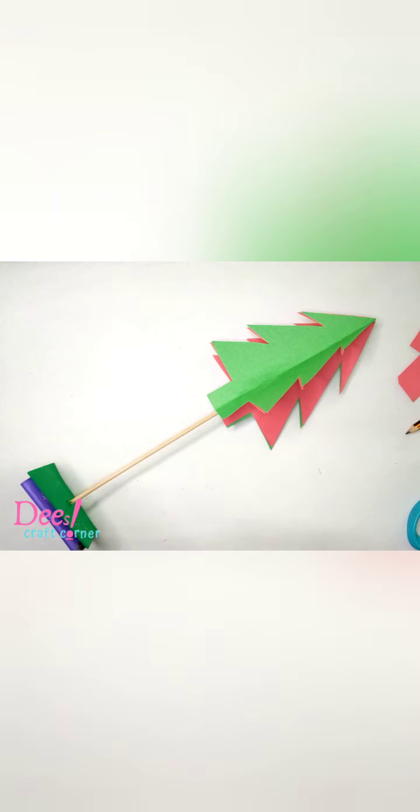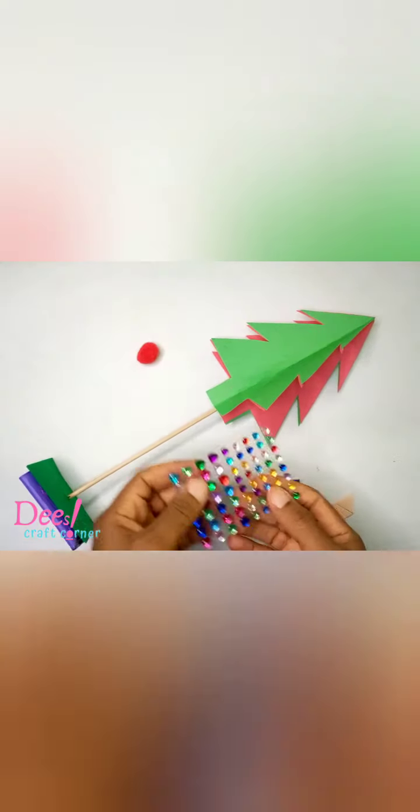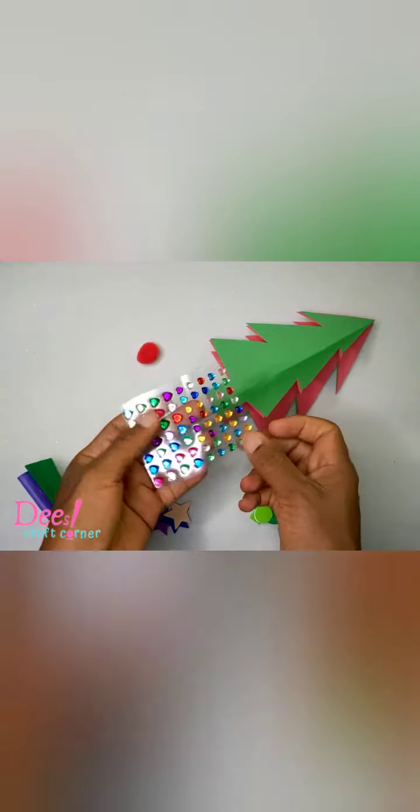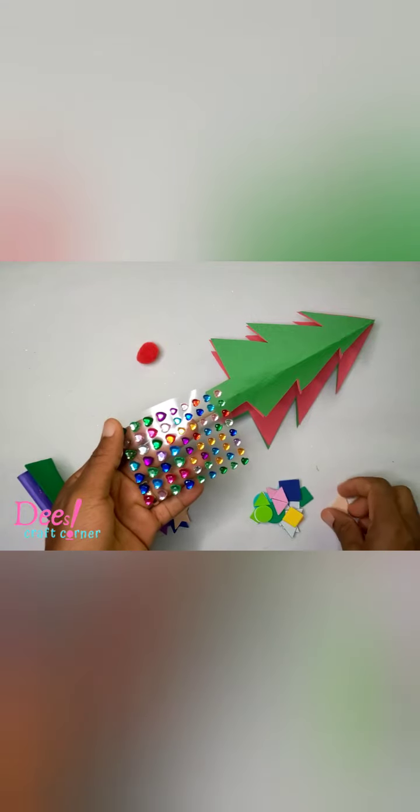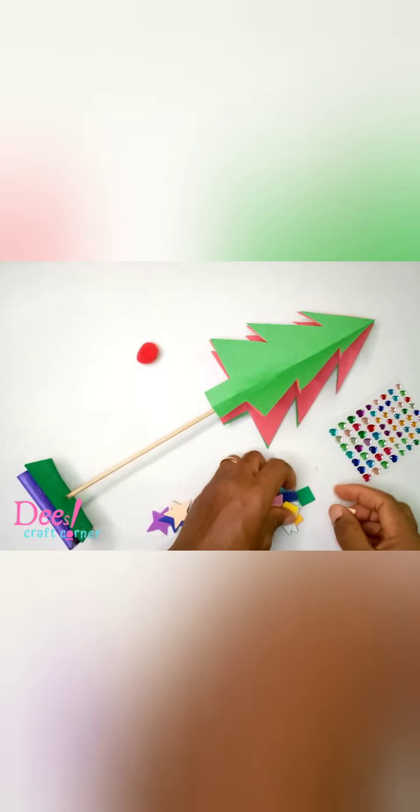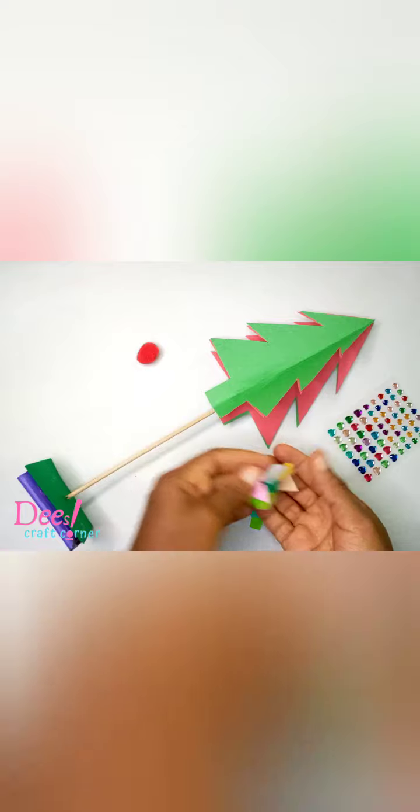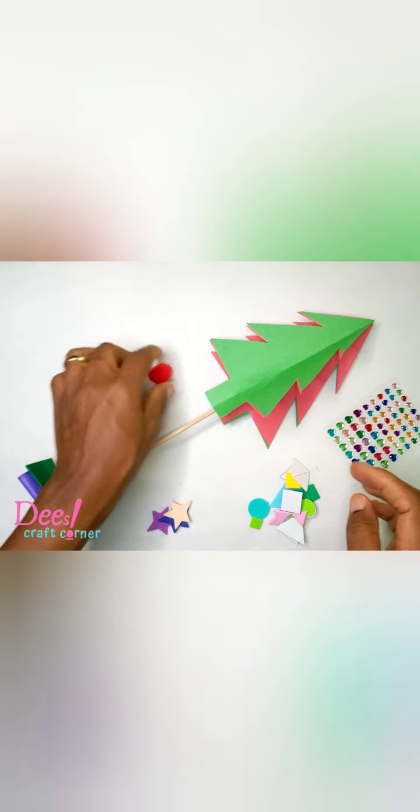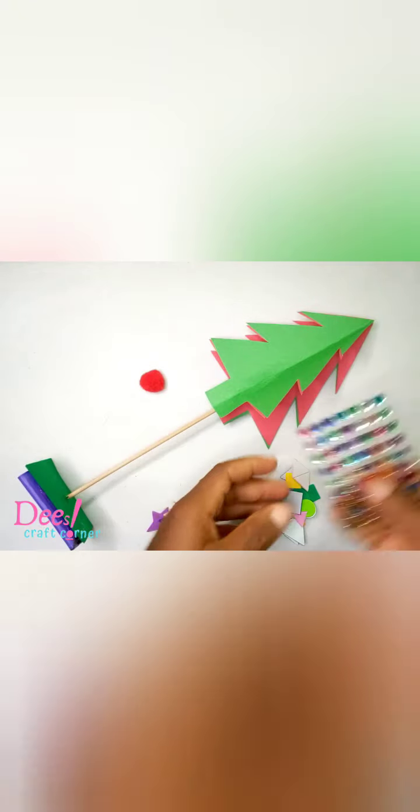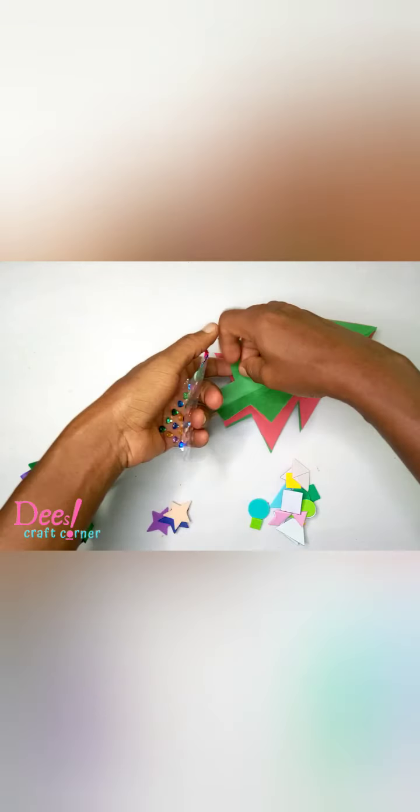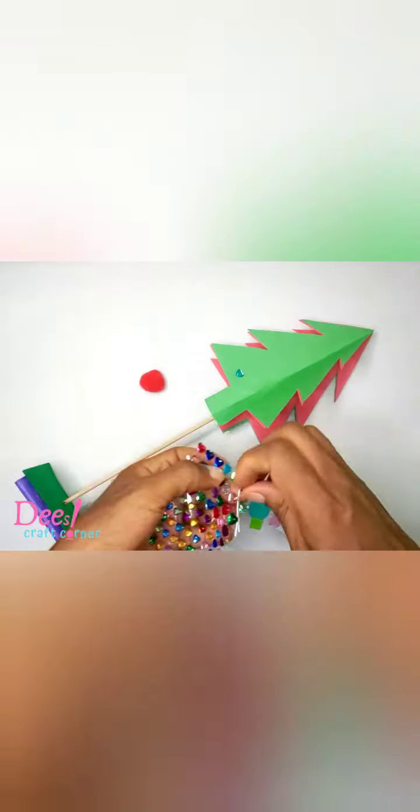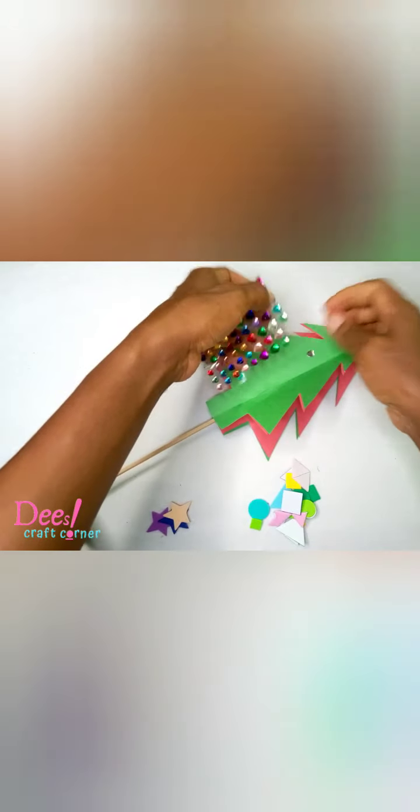Now you can decorate as you wish. These are lovely rhinestones that also come in the craft box, a number of them. I'm going to be using the rhinestones, some stickers, and a pom pom to decorate. My pom pom is going to be at the top. Just stick as you feel like, there's no rule.